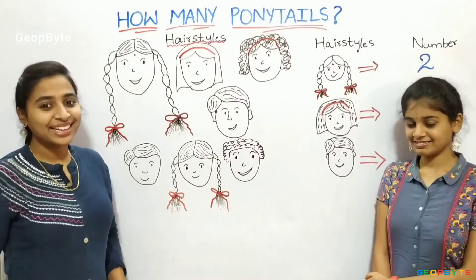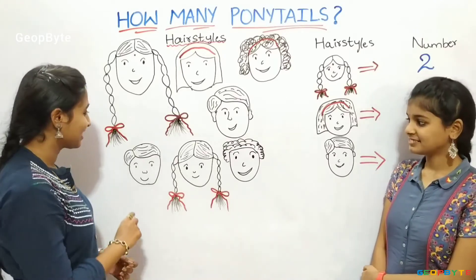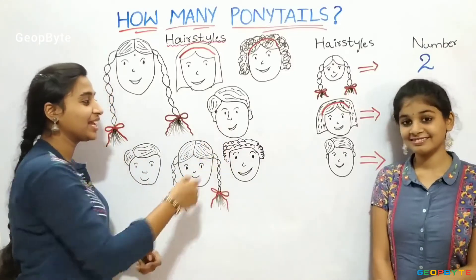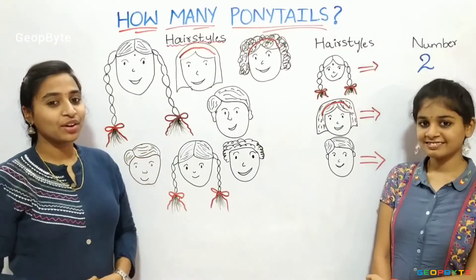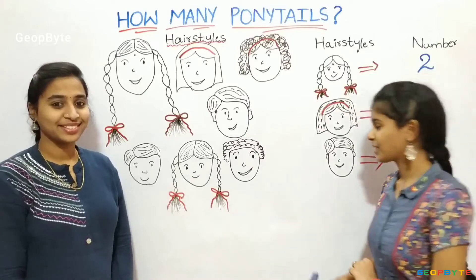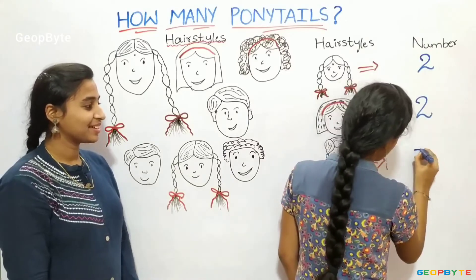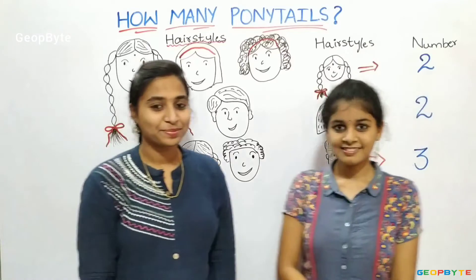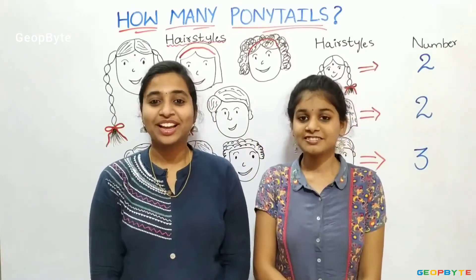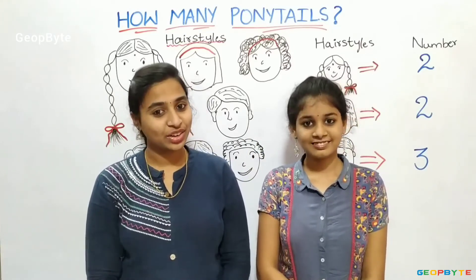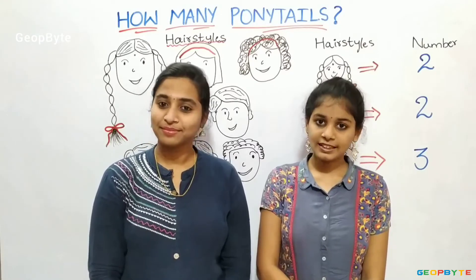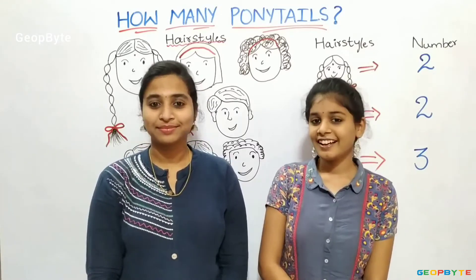Let us count: 1, 2, 3. Now let us count this hairstyle: 1, 2, 3. Hey kids, there is a small activity for you. Try to identify different hairstyles in your classroom and number them. Now we have completely understood the topic: Hairstyles.